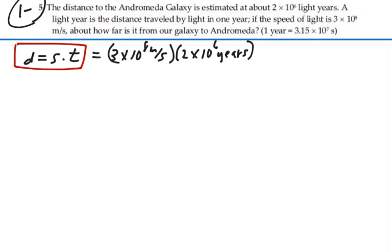Of course, years and seconds won't cancel out, so we need to convert the years to seconds. We're going to multiply this by 1 and say that there is approximately pi times 10 to the 7 seconds in a year. This problem says 3.15, but it's always nice to remember it as pi times 10 to the 7 seconds in a year.